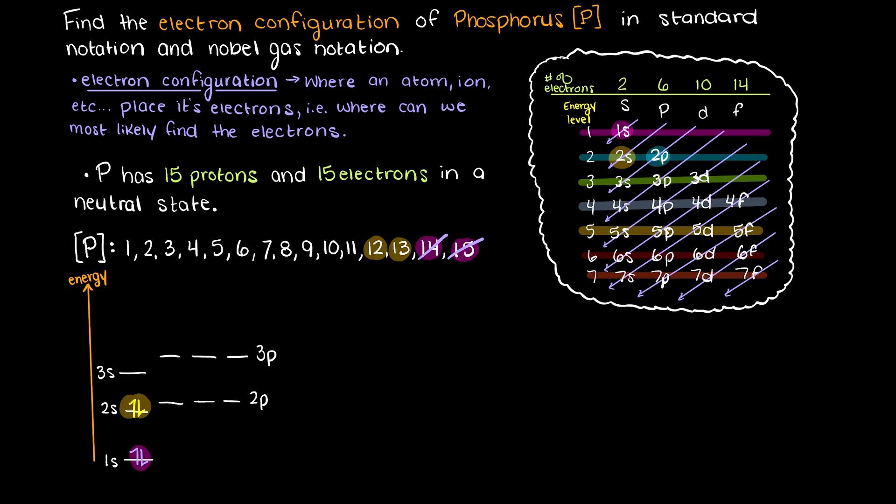Then we have 2p, our p orbitals can hold 6 electrons, so we now only have 5 electrons left to place. Next we have 3s, which will take 2 electrons, and then we have 3p, which will hold the remaining 3 electrons.